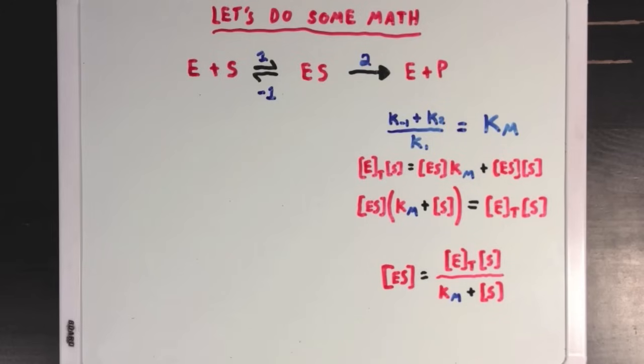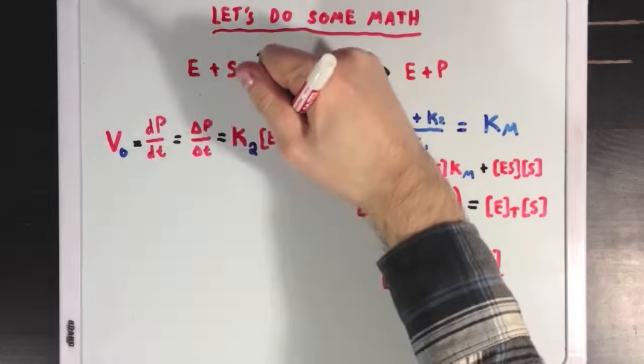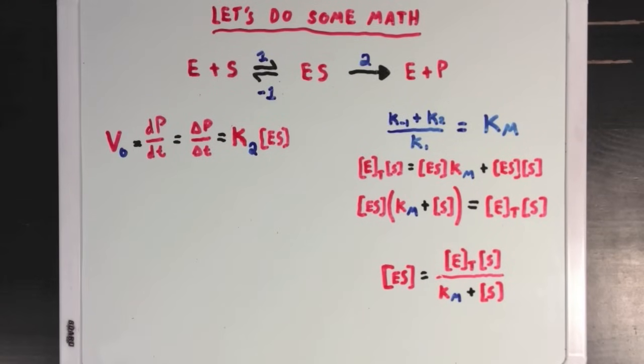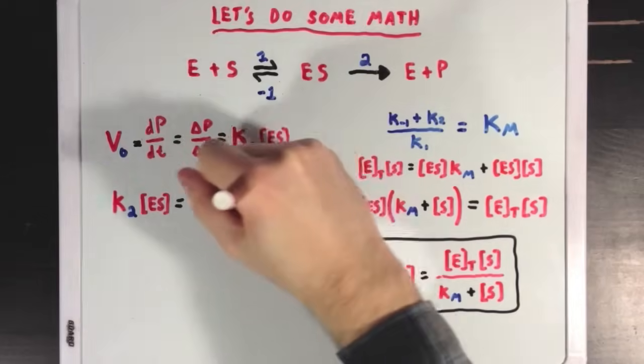So, I'll make some more room over here, and now what I'm going to do is remind you that the speed of our whole process, which I'll call VO, is equal to the rate of formation of our product, which we called rate 2 before, which is also equal to K2 times ES. So, now using our equation over here, I'm going to multiply both sides of the equation by K2.